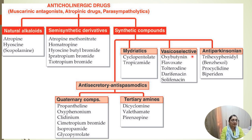Vesico-selective drugs for bladder muscle relaxation include oxybutynin, flavoxate, tolterodine, darifenacin, and solifenacin — these are all vesico-selective drugs.